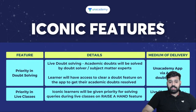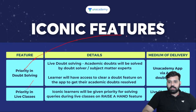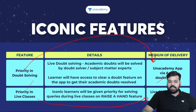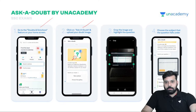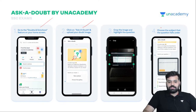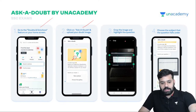Here you can have a look at iconic features. You will have priority in doubt solving and priority in live classes — both available on the Unacademy app. Priority in doubt solving is via the Ask a Doubt feature. Priority in live classes is via the Raise a Hand feature. To use Ask a Doubt, go to the doubts and solutions feature on your phone, click on Ask a Doubt, and upload your doubt image.